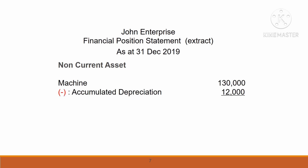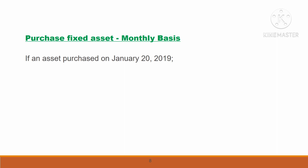This is the financial position statement for John Enterprise — an extract of non-current assets. Machine cost RM$130,000, less accumulated depreciation at the end of accounting period 2019, and you get a carrying amount of RM$118,000.